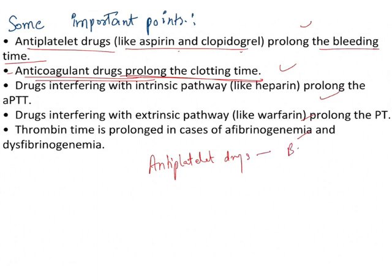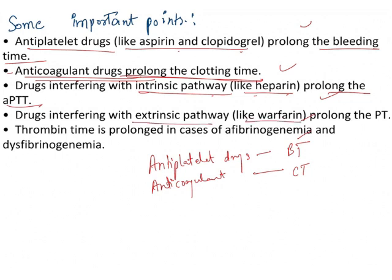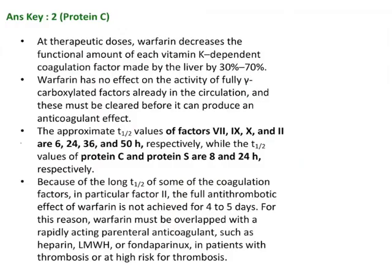To summarize: bleeding time is prolonged by antiplatelets; clotting time is prolonged by anticoagulants. Drugs interfering with the intrinsic pathway, such as heparin, prolong the APTT. Drugs interfering with the extrinsic pathway, such as warfarin, prolong the PT (prothrombin time). Thrombin time is prolonged in cases of afibrinogenemia and dysfibrinogenemia.